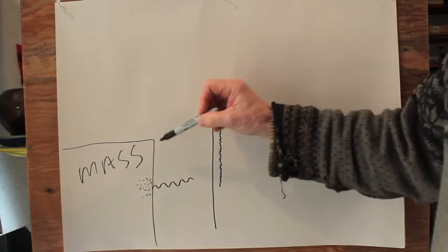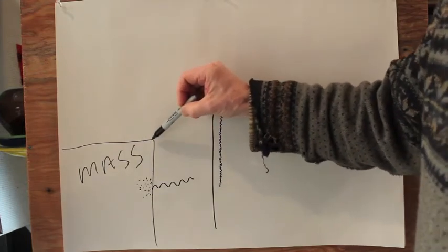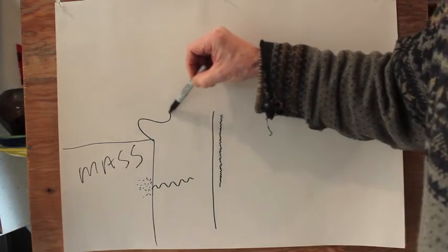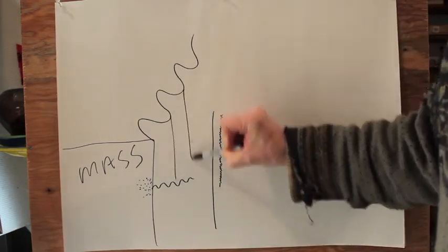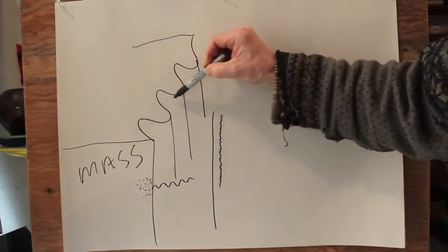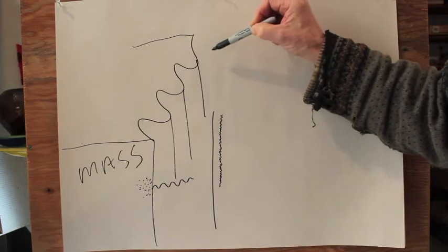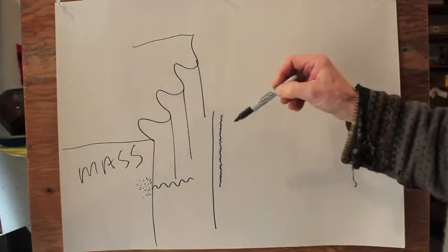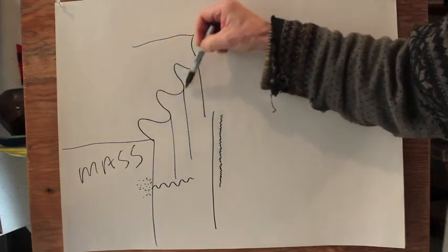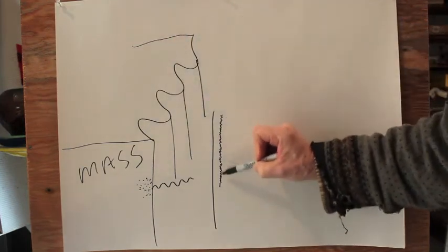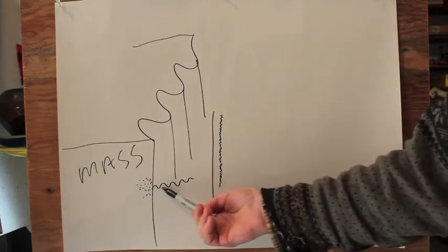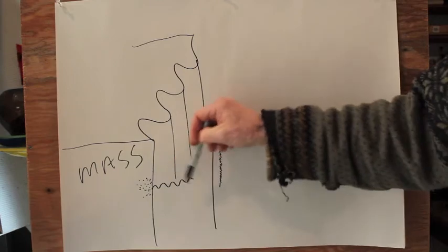When we go back to our mass, our structure here, we can actually increase the surface area of our structure by doing something like this: putting curves in our mass, which is really easy to do with cob because it's so maneuverable when it's being formed. This will increase the surface area. There's a lot more available surface for radiant heat to migrate away from the mass.